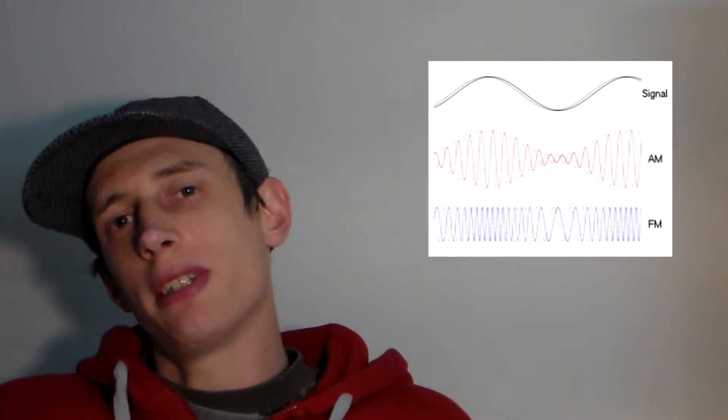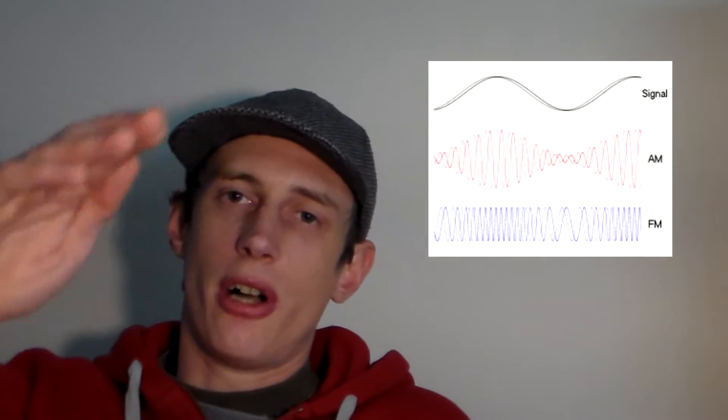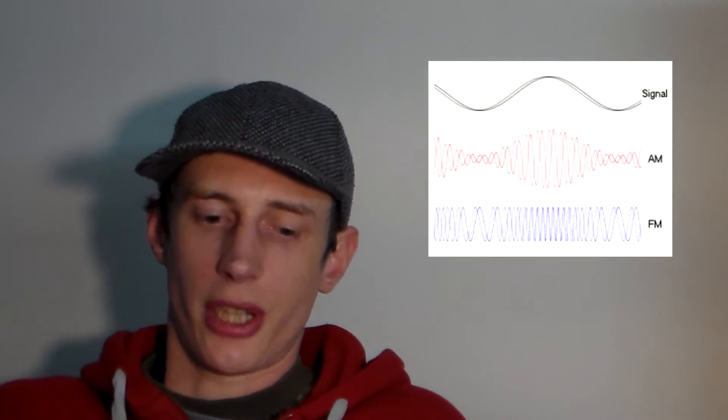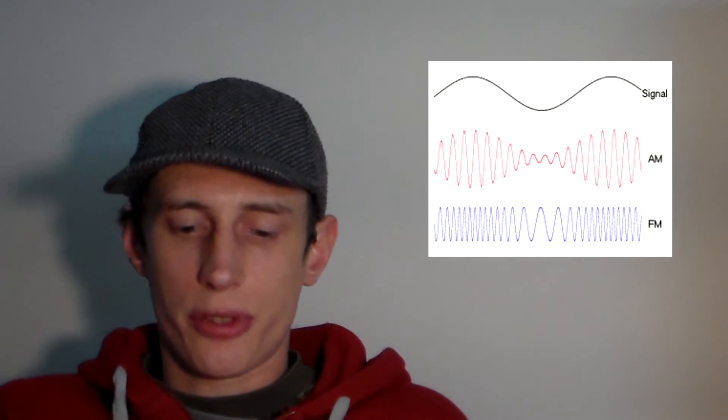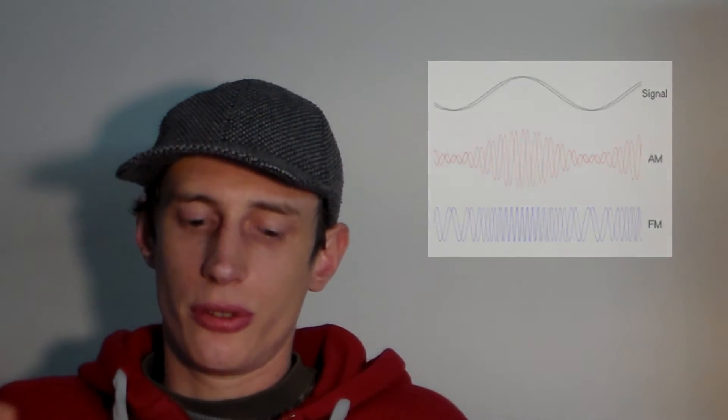Signals are usually transmitted by means of FM - frequency modulation - or AM - amplitude modulation. Amplitude modulation modulates the height of the wave to carry the signal, while frequency modulation modulates how often the wave occurs to transmit the data. Both can be used to transmit analog and digital signals.